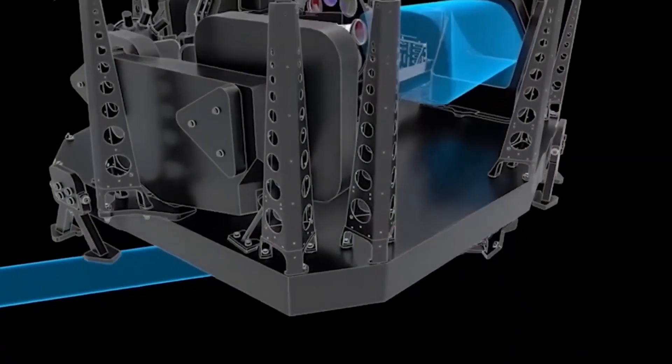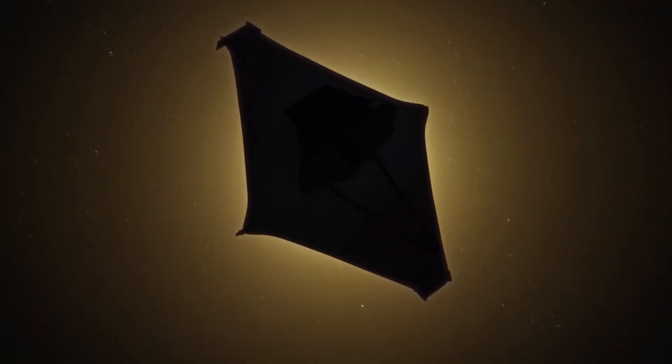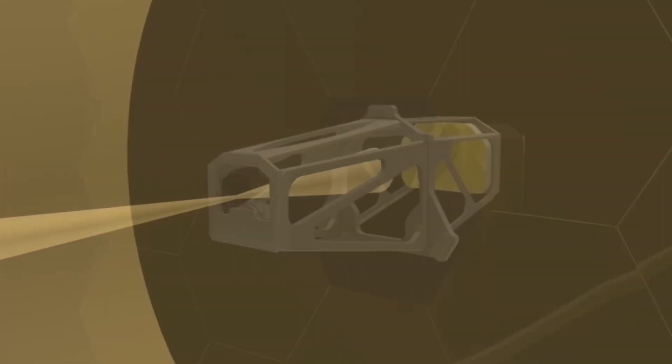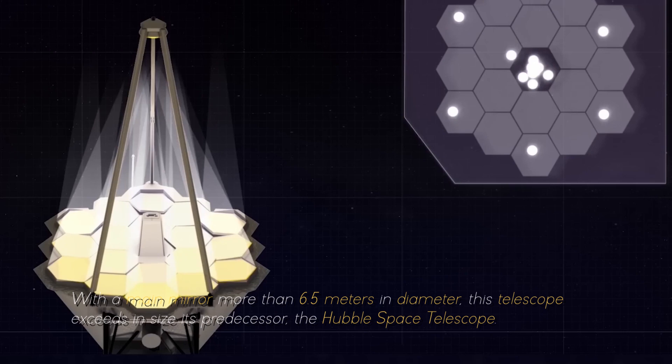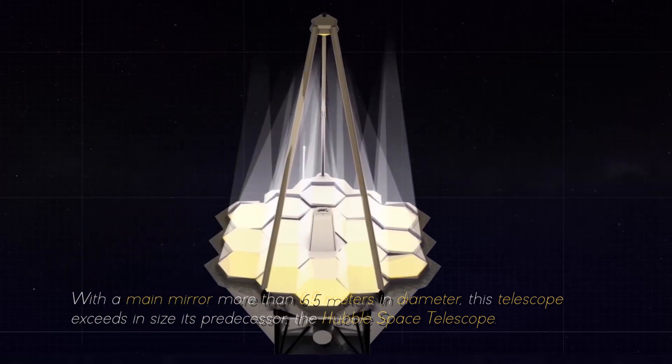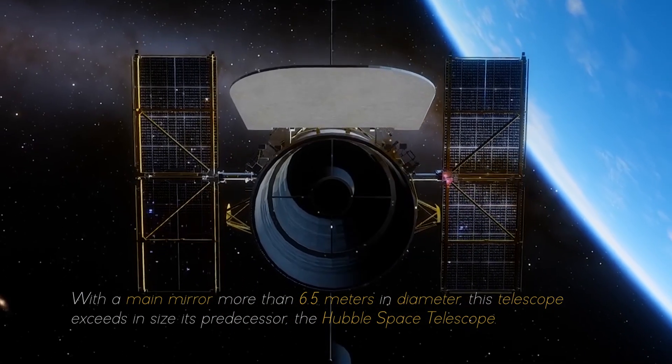The James Webb Space Telescope is equipped with an array of advanced scientific instruments carefully designed to observe the universe at an unprecedented range of wavelengths. With a main mirror more than 6.5 meters in diameter, this telescope exceeds in size its predecessor, the Hubble Space Telescope.